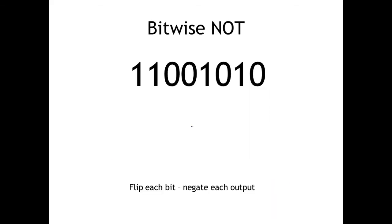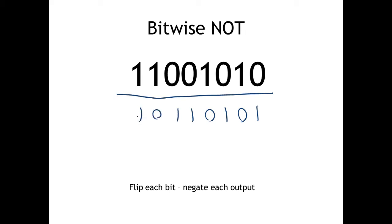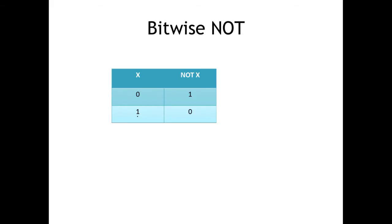Bitwise NOT is pretty straightforward. Just like logical negation — the exclamation point in most languages — it changes the meaning. If you negate something that's true it becomes false, and false becomes true. Here, when we apply NOT, we just flip all the bits: ones become zeros and zeros become ones. The truth table shows that NOT X simply becomes the opposite of X.